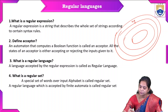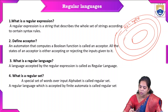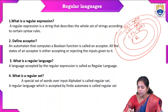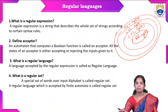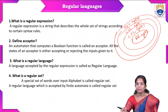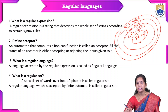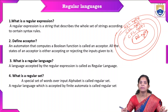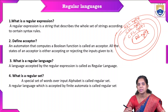The four types are: Type 0, which is recursive enumerable language; Type 1, which is context-sensitive language; Type 2, which is context-free language; and Type 3, which is regular grammars and regular languages. These are all the different types of languages in formal languages. In this video we are going to discuss regular languages — how we represent finite automata and regular expressions.